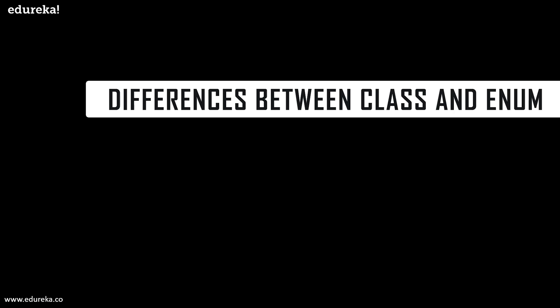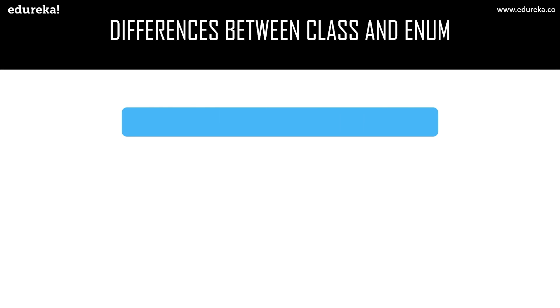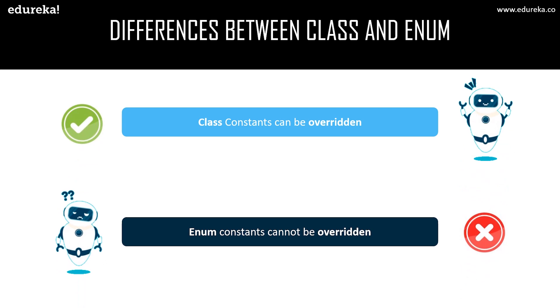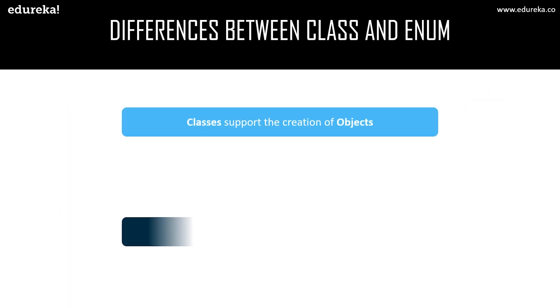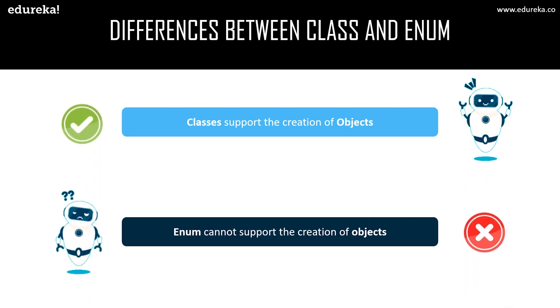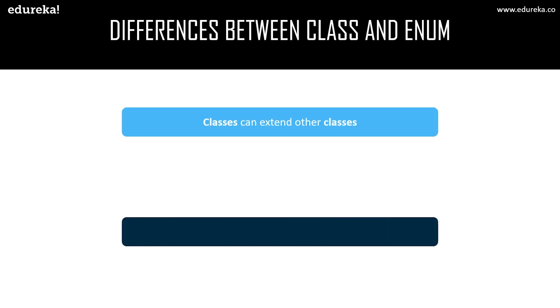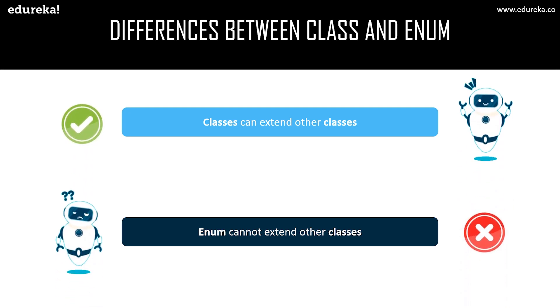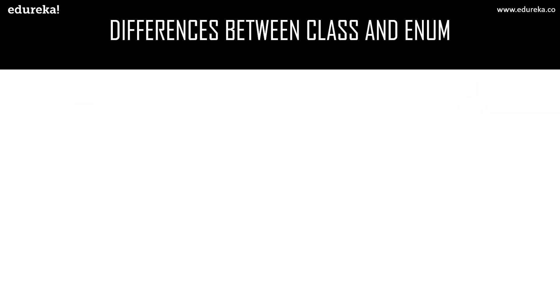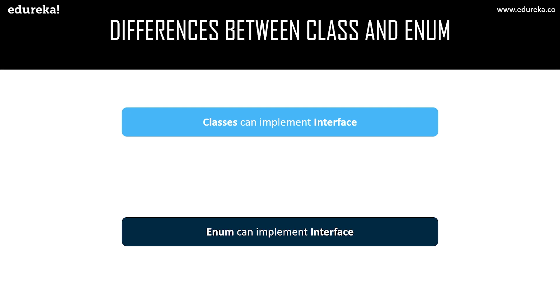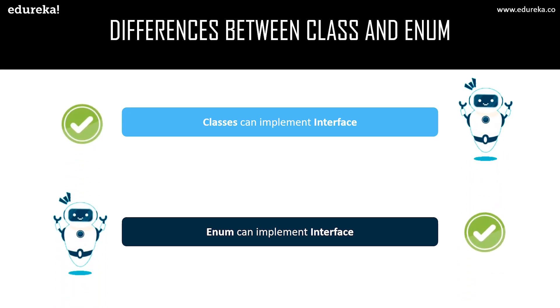Now let us move on to the differences between class and enum. First, class constants can be overridden while enum constants cannot be overridden. Second, classes support the creation of objects whereas Java enum cannot support the creation of new objects. Third, classes are capable to extend other classes, but enum cannot extend other classes — though it can implement other interfaces. Similarly, both classes and enums can implement an interface, so both have the upper hand there.